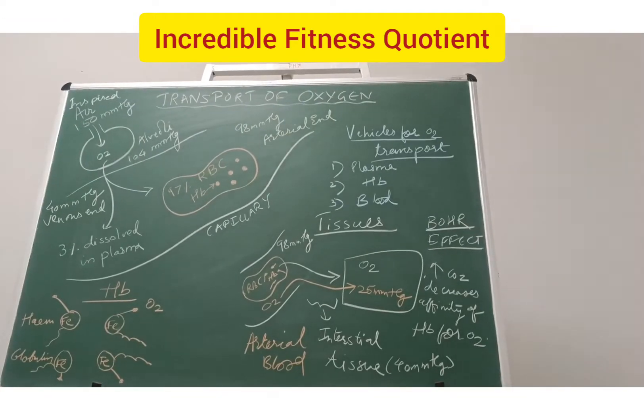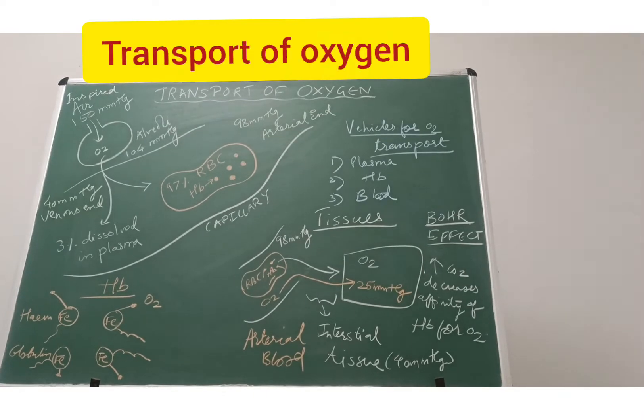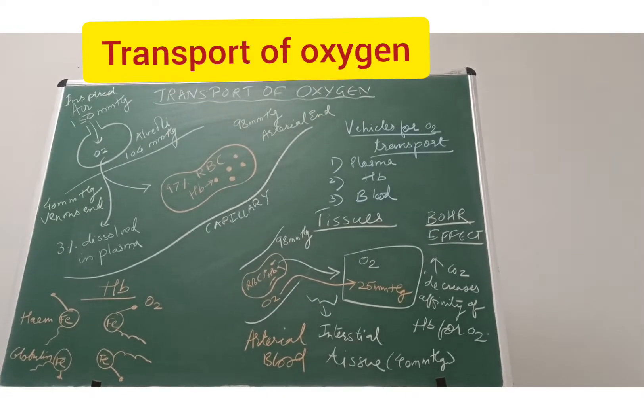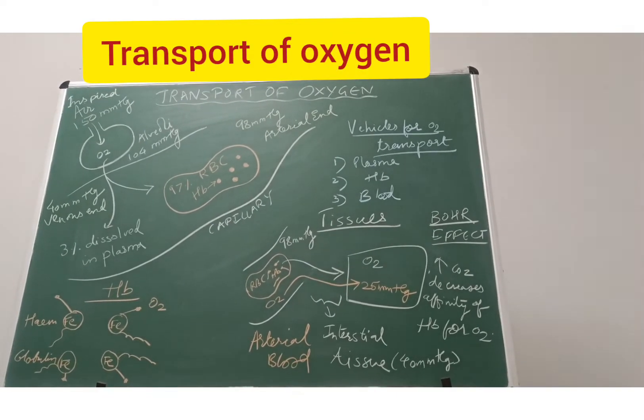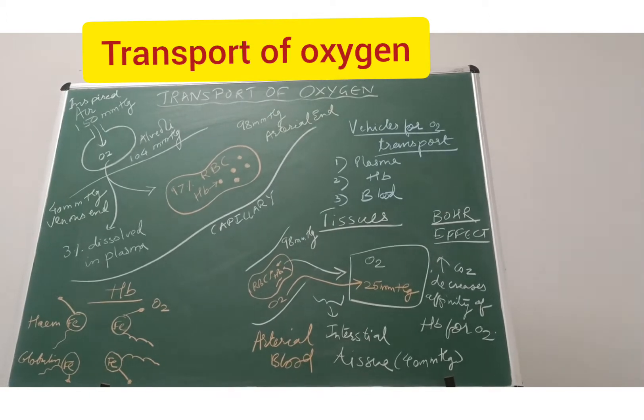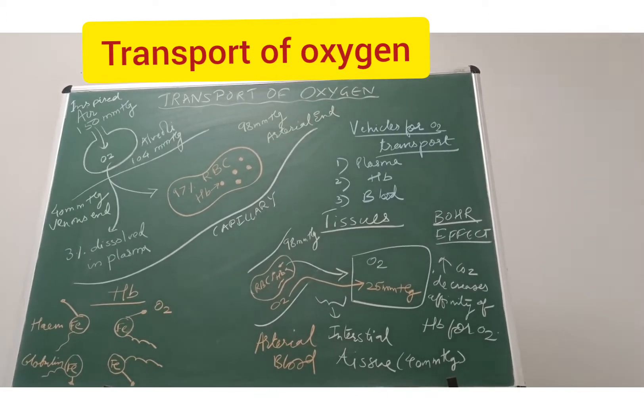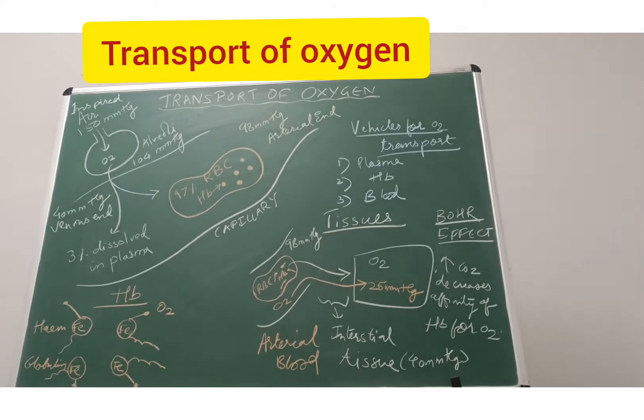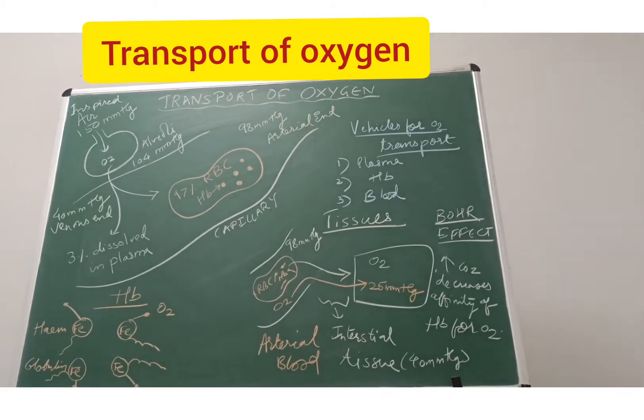Before beginning the lecture, we should know that the transfer of oxygen and CO2 by the blood is often referred to as gas transport. It forms an important step in the overall process of gas transfer between lungs and tissues, and this is an important function of the circulatory system.